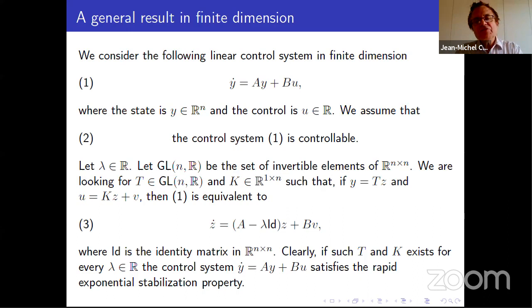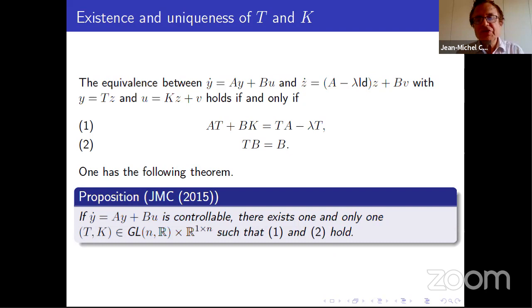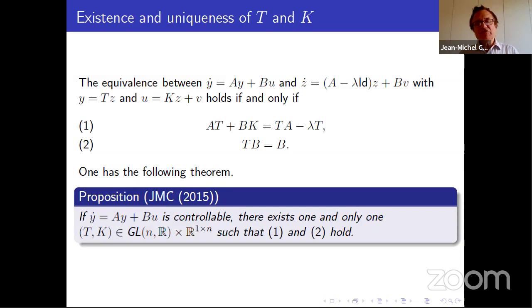This is something quite general. Going back to a finite dimensional control system y-dot equals Ay plus Bu with the system controllable, you want to transform the first system into the second using transformation y equals TZ and u equals KZ plus V. The unknowns are T and K. If the system is controllable there always exists a solution, and it is unique when the control is of dimension one (not unique in general). It would be interesting to get similar results for infinite dimensional control systems — this is not known and is an open program.